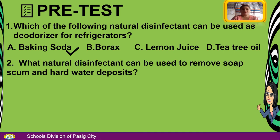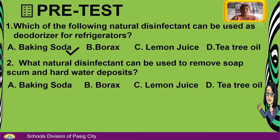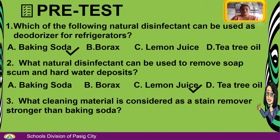Number 2. What natural disinfectant can be used to remove soft scum and hard water deposits? A. Baking soda. B. Borax. C. Lemon juice. D. Tea tree oil. The answer is C — Lemon juice.